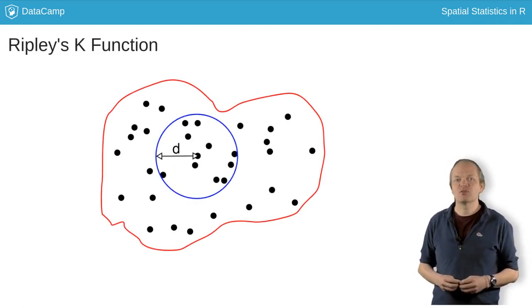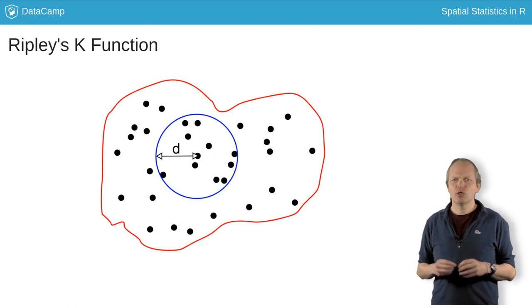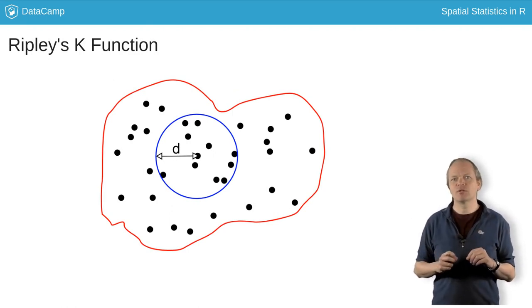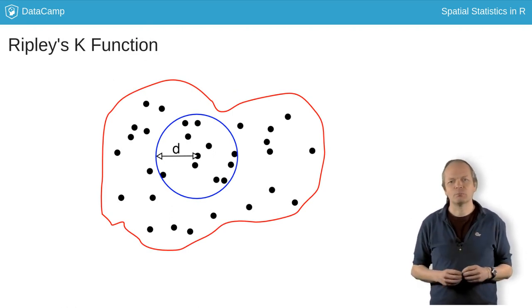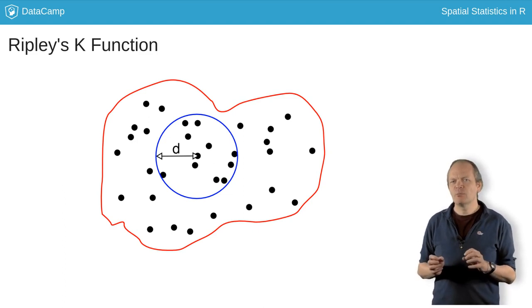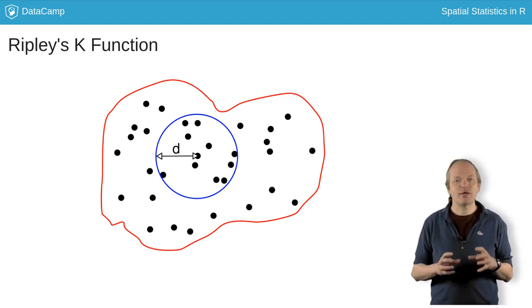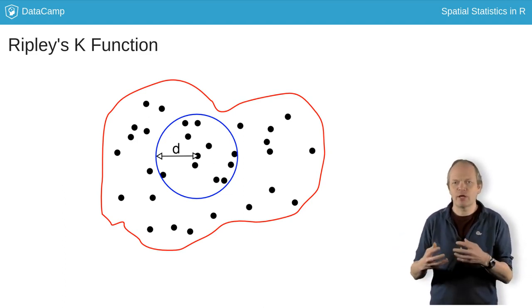Another useful function of spatial point processes is the Ripley's reduced second moment measure, better known as the K function. K is the number of expected events to be found at a given distance from an event scaled by the intensity.